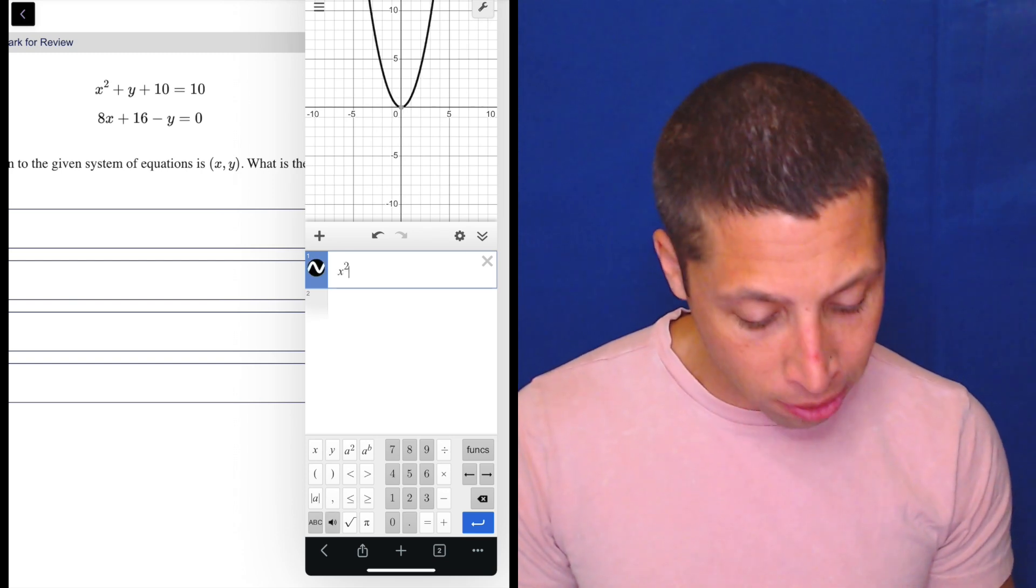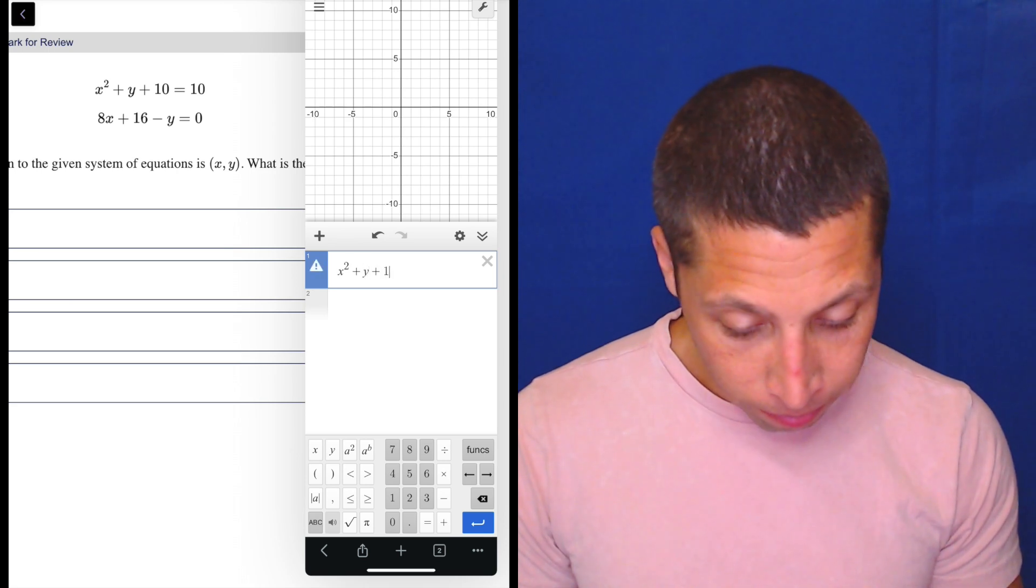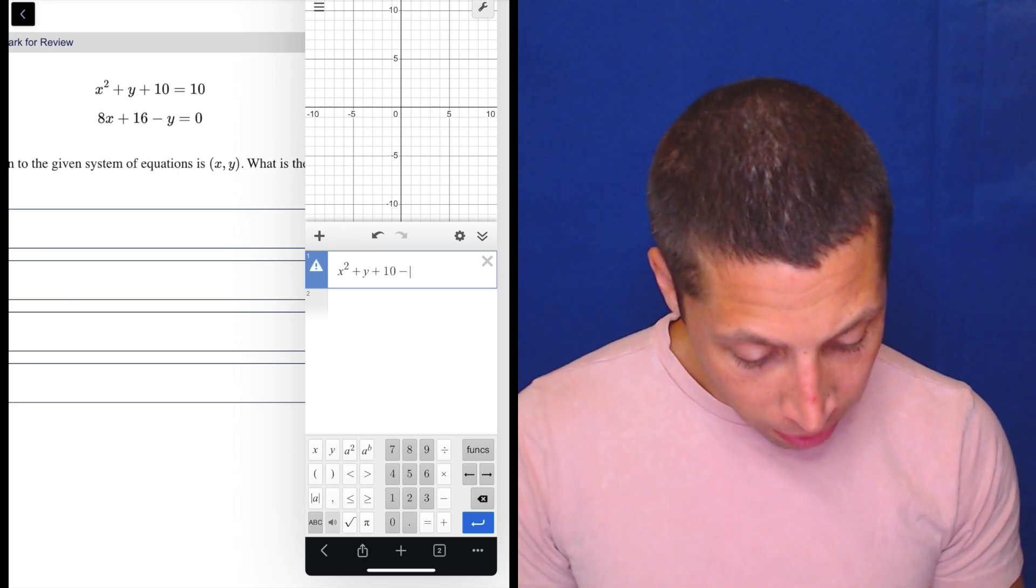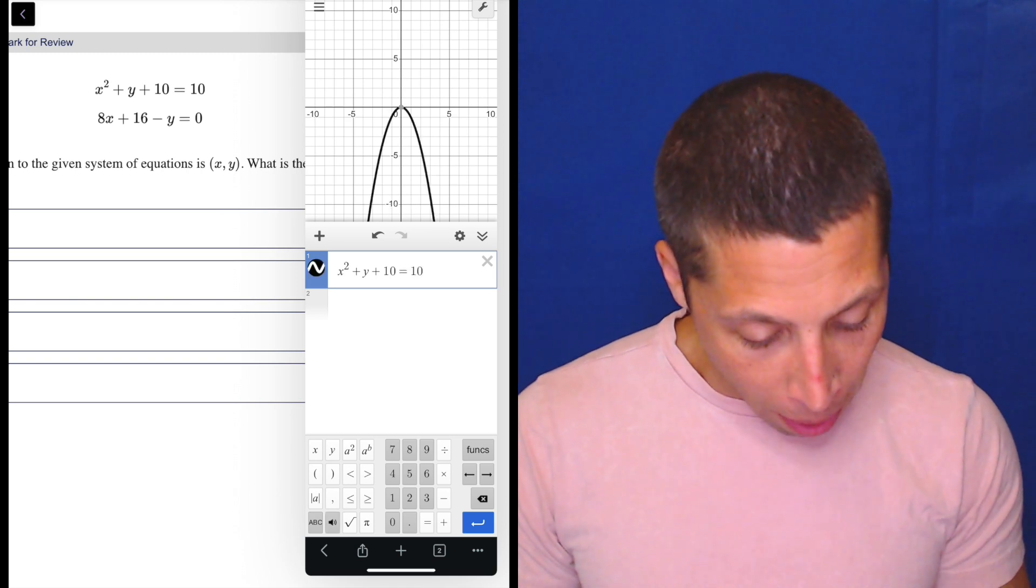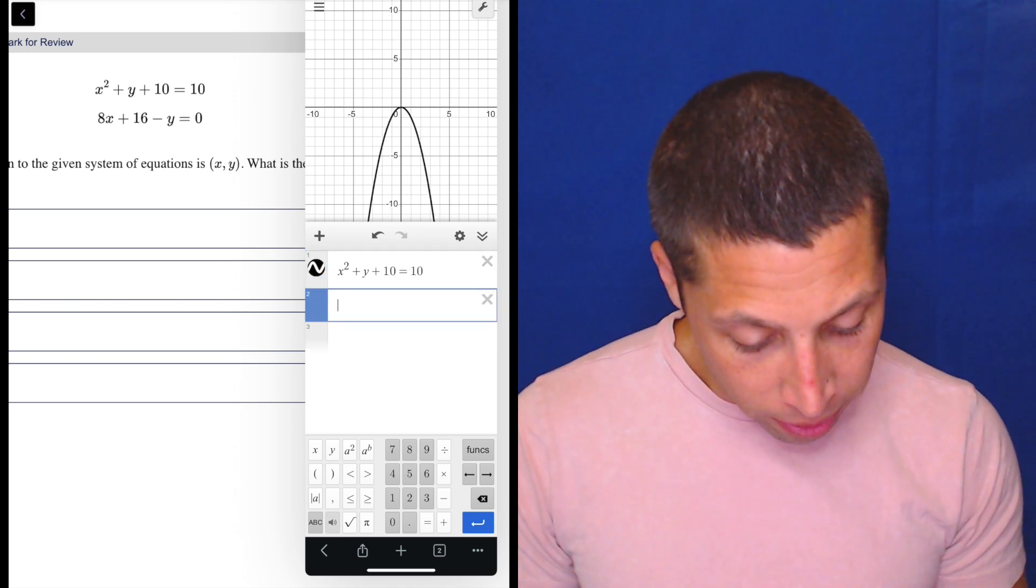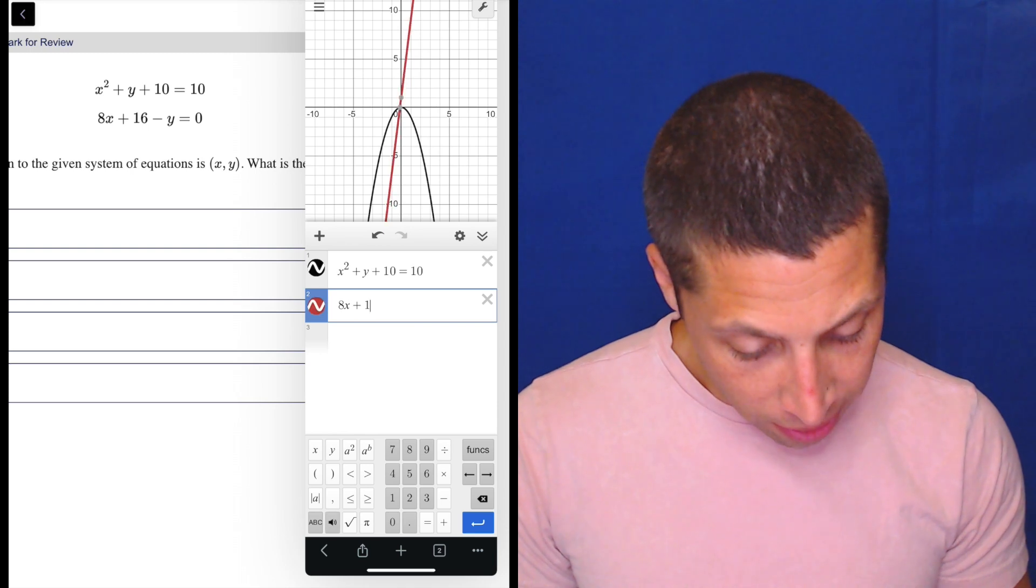So x² + y + 10 = 10, and we get a parabola—no surprise. Then the other one: 8x + 16 - y = 0, and we get a line. We're looking for the solution, which means we're looking for the intersection points.